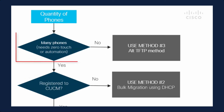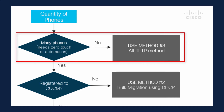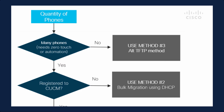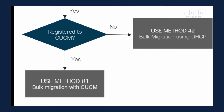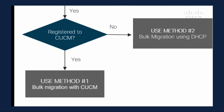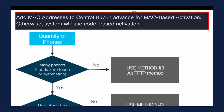First, how many phones do I need to migrate? If it is a very small amount, just go ahead and use the alternate TFTP method. If it's a large quantity where you need zero-touch or want to automate it, determine whether or not they are registered to Call Manager. If they are, use the bulk migration method with Call Manager. Otherwise, if they are in a staging facility and not registered to Call Manager, use the bulk migration method using DHCP options. Keep in mind: if you want MAC-based activation for all your phones, add your MAC addresses into Control Hub in advance. Otherwise, it will default to activation code onboarding.